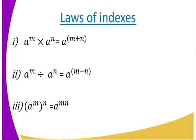Let us look at the laws of indices. First: A raised to power M times A raised to power N equals A raised to power (M + N) — we add the powers, and this only applies when the bases are equal. Second: A raised to power M divided by A raised to power N equals A raised to power (M − N), again when bases are the same. Third: A raised to power M, the whole bracket raised to power N, equals A raised to power MN. Those are the three laws of indices.